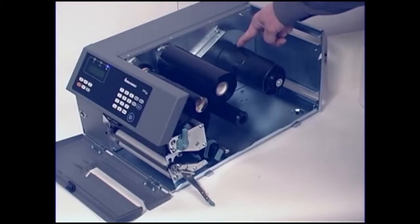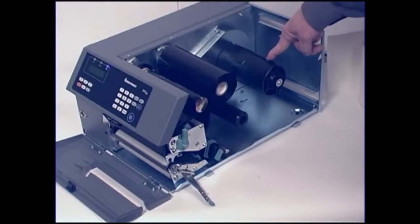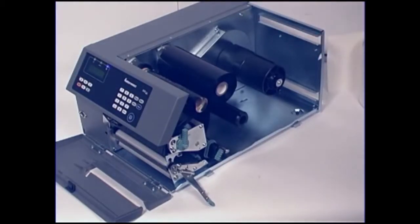If you are using a media roll with a 76mm 3-inch core, install a 3-inch adapter on the media supply hub before placing the media on the hub. Instructions for this procedure are in the printer's user's guide, which can be downloaded from the Intermec website.